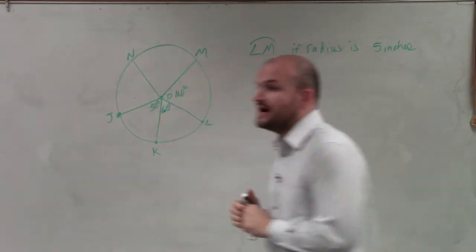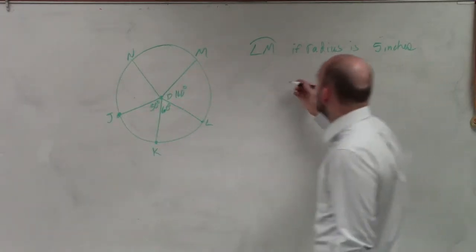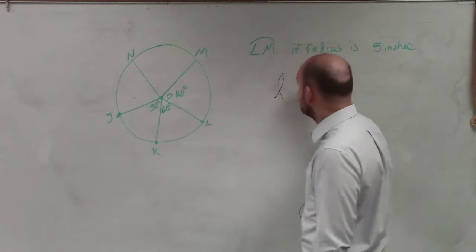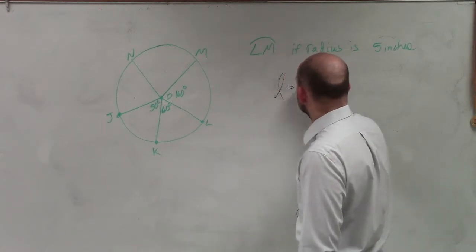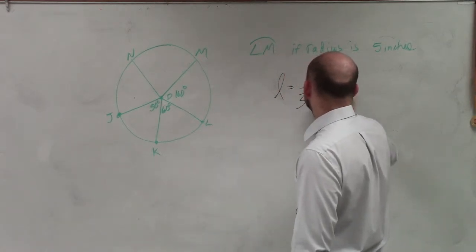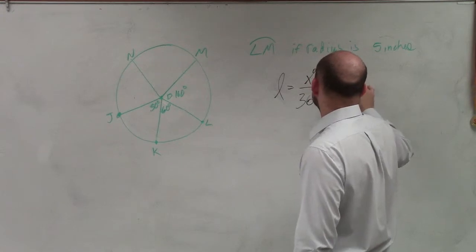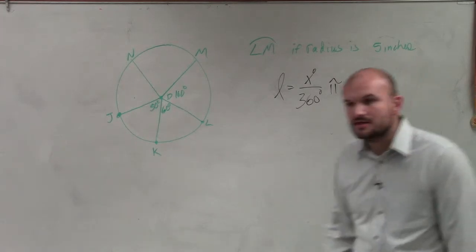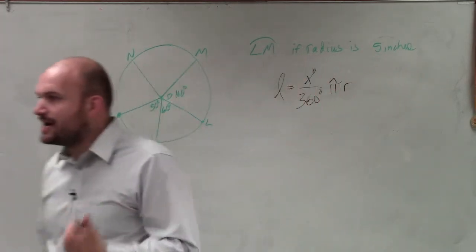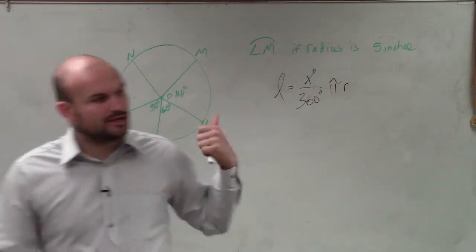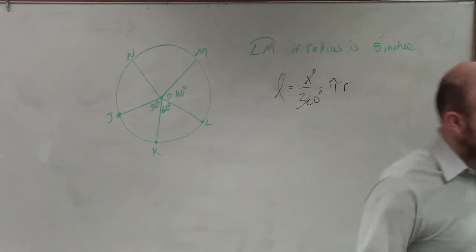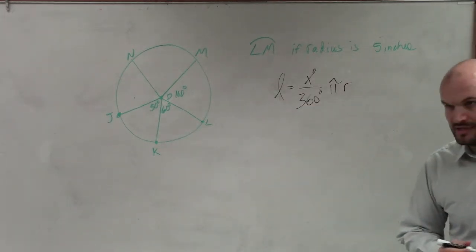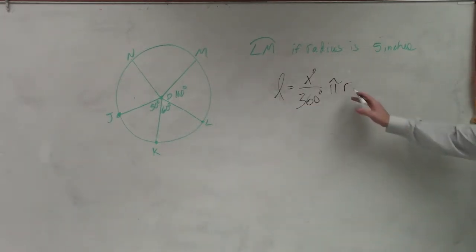So to find the formula for this, I'm just going to do length equals x degrees over 360 degrees times radius times pi, or pi times radius. It doesn't really matter. All right? So to find the length of my arc, I need to use that formula. So if you weren't here last class period, that is the formula that you need to have.